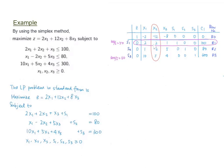Now we focus on the key column. Among the constants in the constraint equations, we focus on those which are positive and take the ratio of the corresponding ci divided by that particular number. For the first row, we get 100 divided by 2 equals 50. We ignore the second row because that number is negative. For the third row, we get 300 divided by 5 equals 60. We choose the minimum, so the first row is selected as the key row, meaning s1 will be replaced by x2 as the new basic variable.